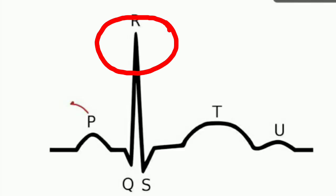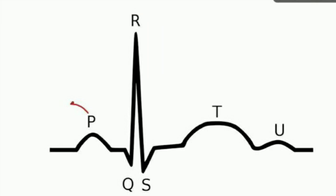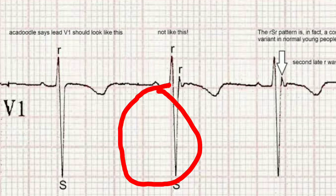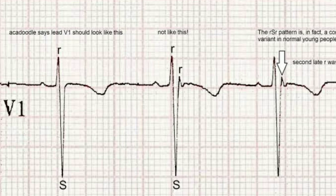After the Q wave, in lead V5 and V6 there is a tall R wave — the largest positive deflection — and in V1 and V2 a very deep S wave — the largest negative deflection. Both are caused by depolarization of the left ventricular muscle mass, moving from endocardium to epicardium. This generates the tall R wave in V5/V6 and a deep negative S wave in V1/V2. After the R wave comes the last negative deflection, the S wave.